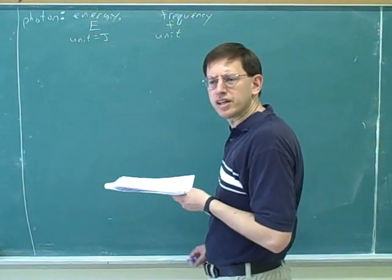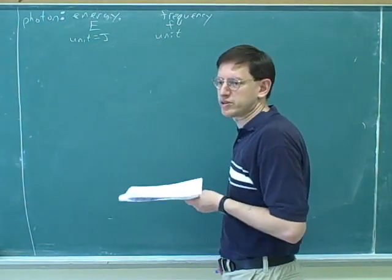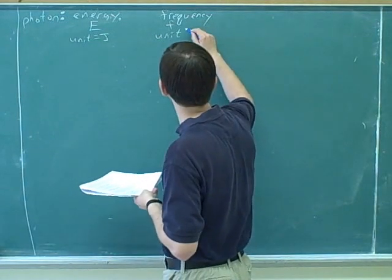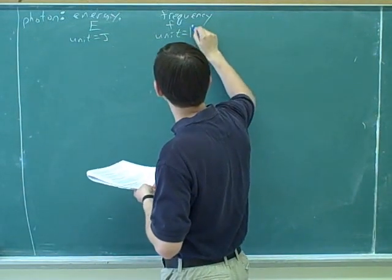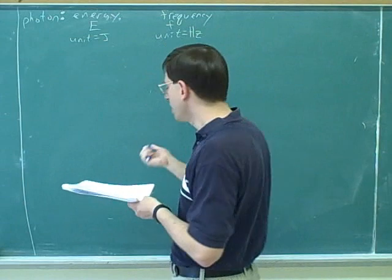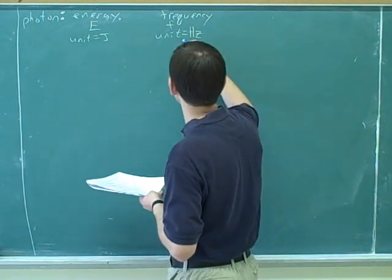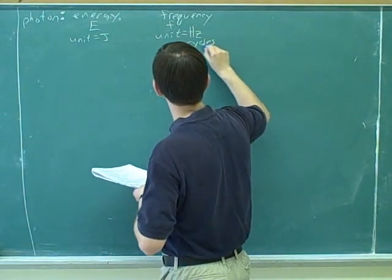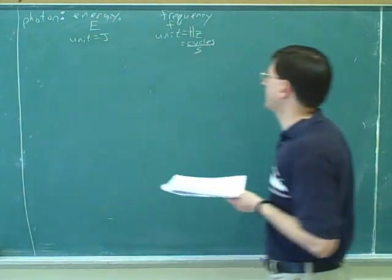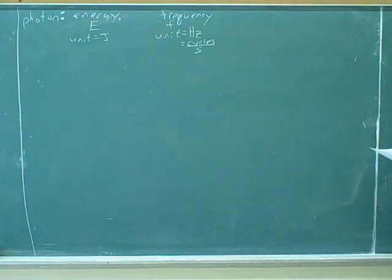There's a special name for that unit. That's a good way to interpret it, cycles per second. Do you know what the name of that unit is? No. So that's hertz. It's also good to know that it's hertz, but it's even better to think of it as cycles per second. Sometimes people just say per second, but it's more intuitive to say cycles per second.